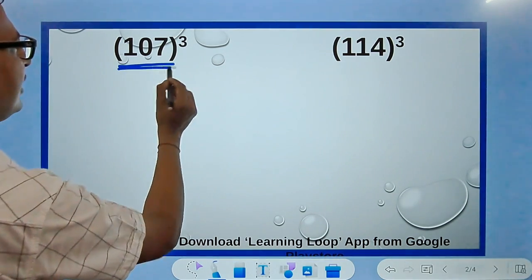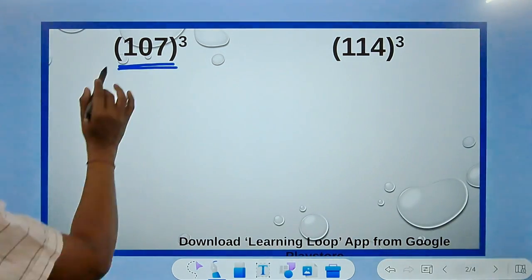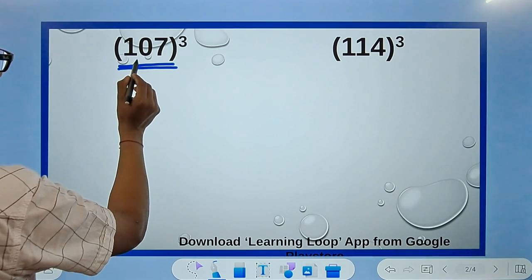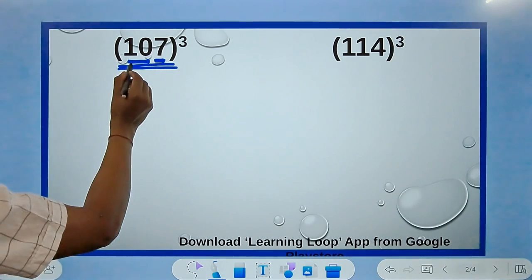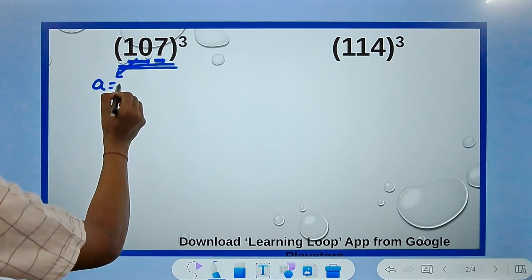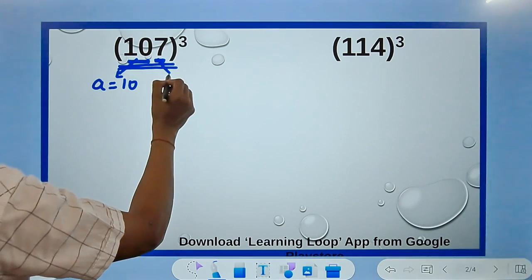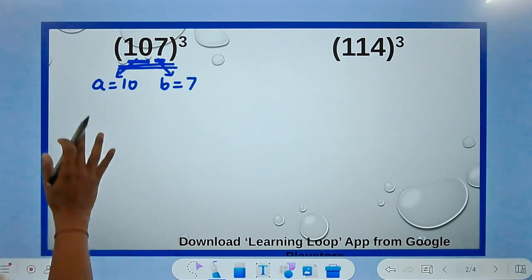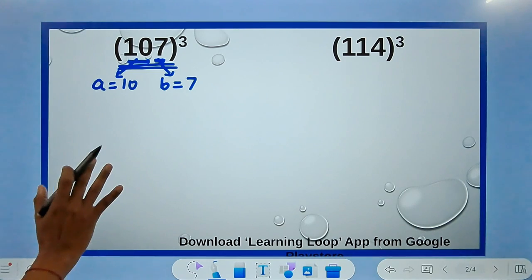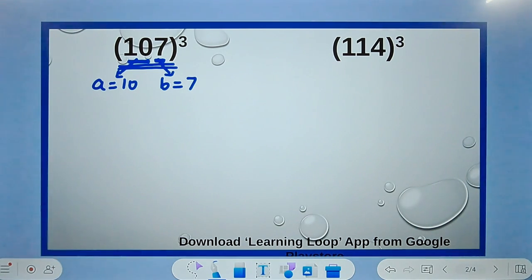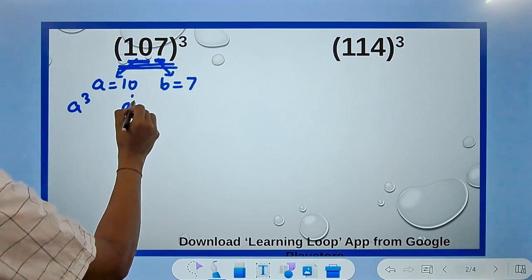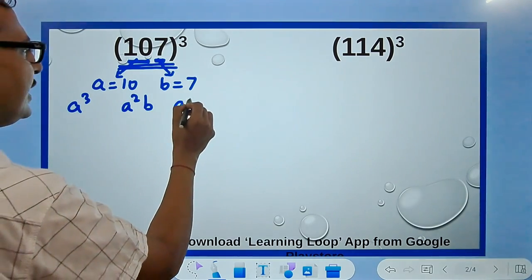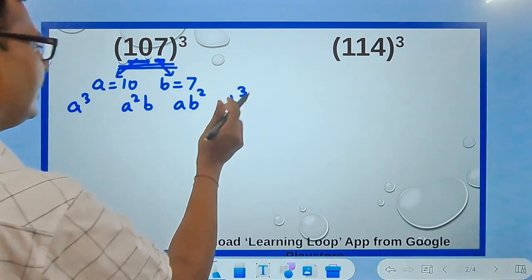Here we have the number 107 cubed. I'm going to break down this number into two parts: 10 and 7. This 10 is a, so the value of a is 10, and the value of b is 7. I'm going to write four terms here from the algebraic identity (a+b)³: a³, then a²b, then ab², and then b³.